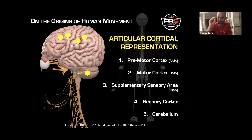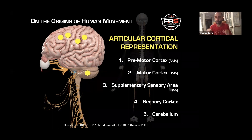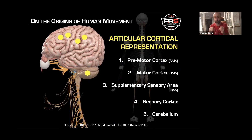From the thalamus, the information gets relayed into all of the areas of the cortex which are there to control human movements: pre-motor cortex, motor cortex, supplementary sensory area, sensory cortex, cerebellum — all controlling human movement. Think about it. Why does the brain want the information specifically from the capsule, and why does it want it first? Because preservation of the capsule is the outcome measure that governs all motor outputs.